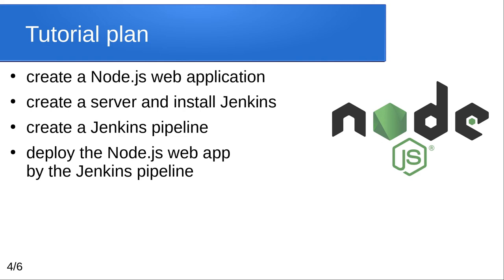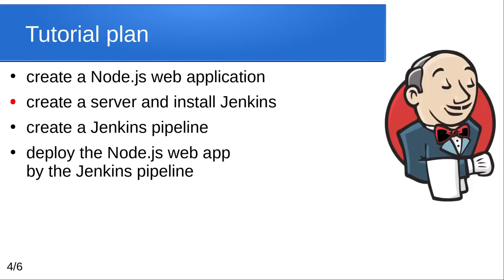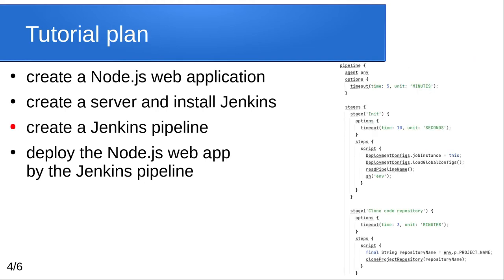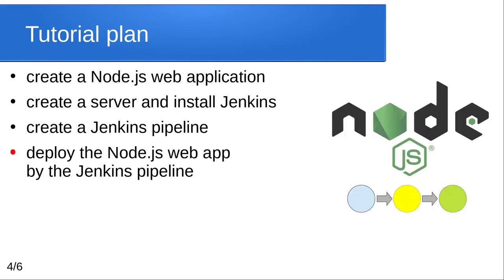In the first part of this tutorial we will create a simple Node.js web application. The scope is to deploy the application with Jenkins. The second part is to create a Linux server and install Jenkins on that server. The third part is the biggest one — the pipeline creation. We will create a Jenkinsfile, a shared library, and configuration files. Once the pipeline is ready, we will deploy the Node.js web application.